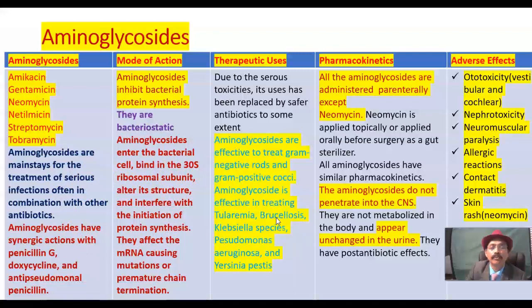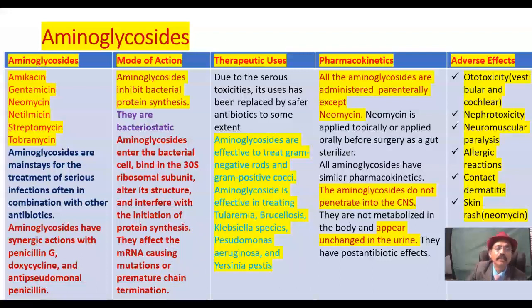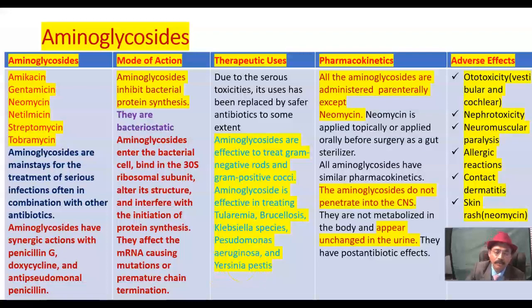Aminoglycosides are effective in the management of brucellosis, using gentamicin plus doxycycline. They are also used against Klebsiella species, Pseudomonas aeruginosa, and Yersinia pestis. Streptomycin is a very good drug for Yersinia pestis, and we use streptomycin plus doxycycline in that case.